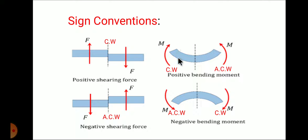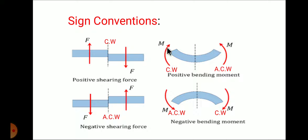You can consider the right section or the left section. For example, considering the right section: if the bending moment is anti-clockwise - the moment is vertical load into perpendicular distance - if the moment is in anti-clockwise direction then take it as positive bending moment. If it is anti-clockwise, the beam will bend in sagging or smiley face. In the left section method, if the moment is in clockwise direction, then consider positive bending moment.